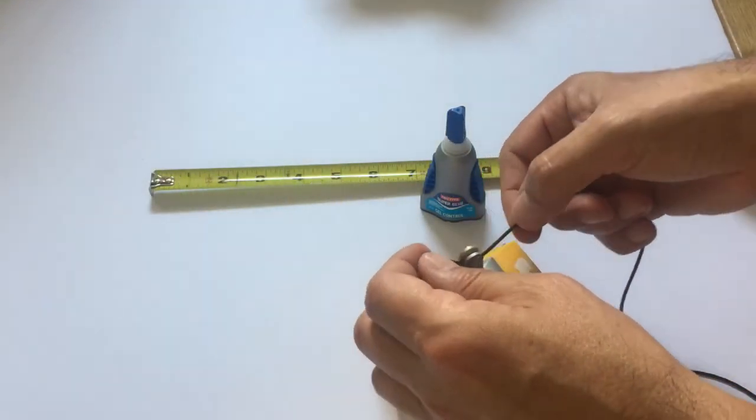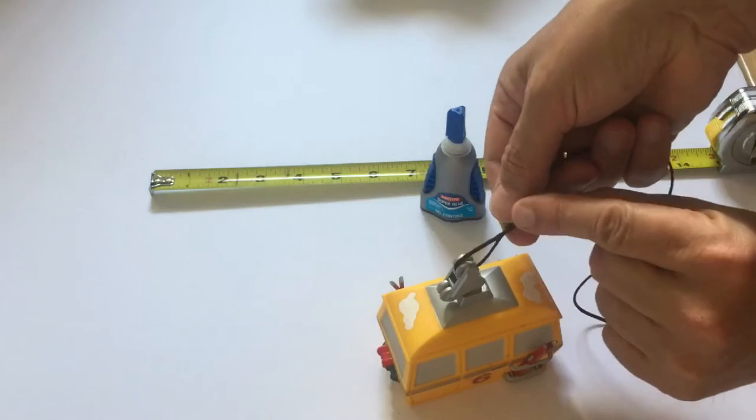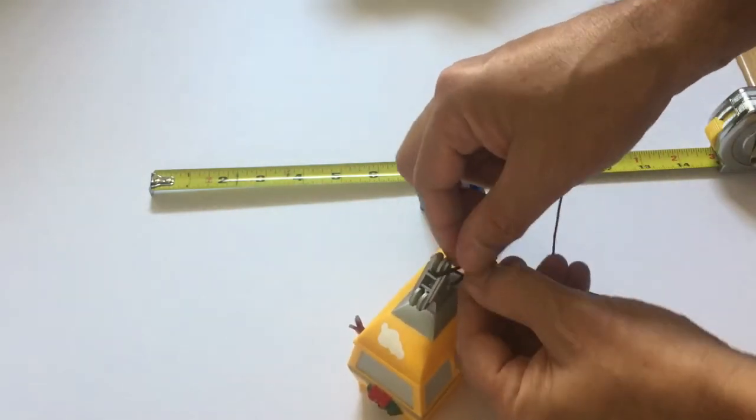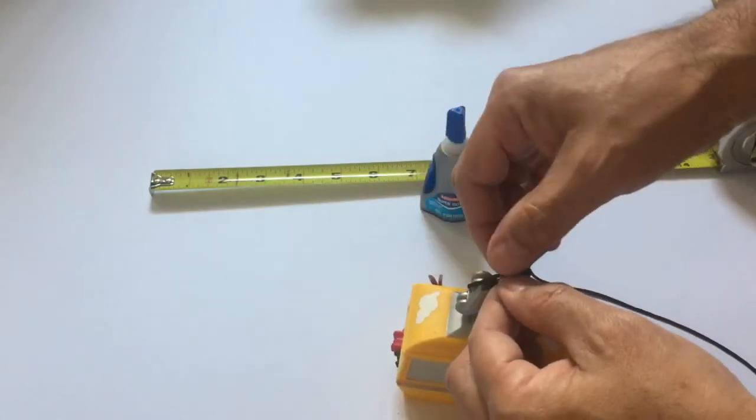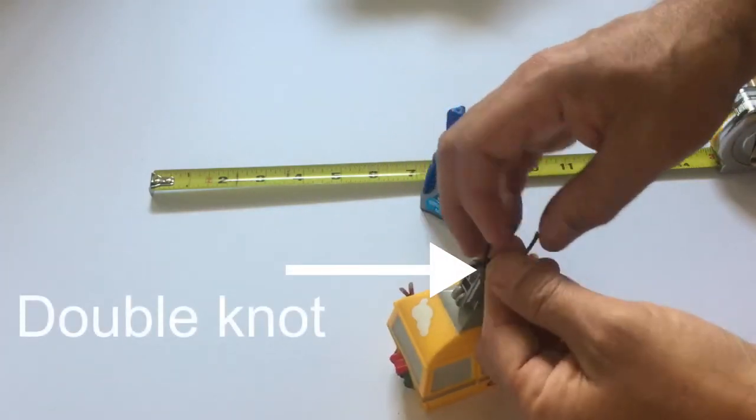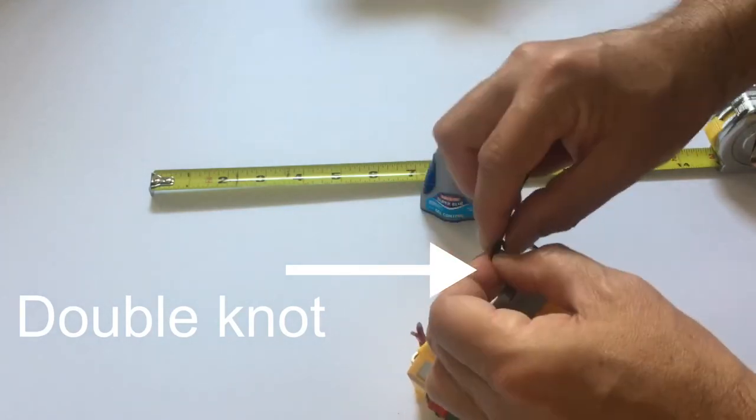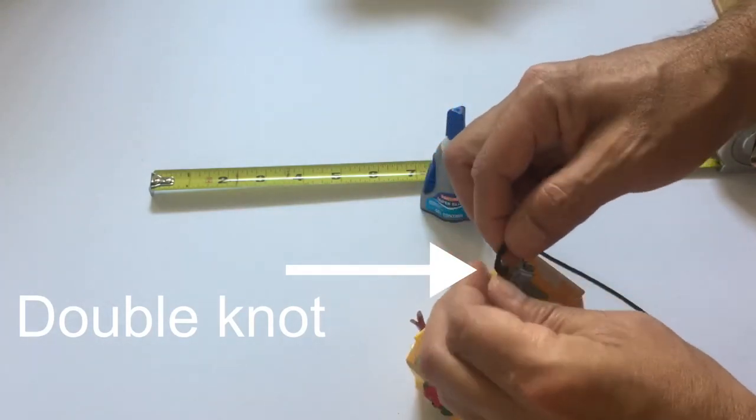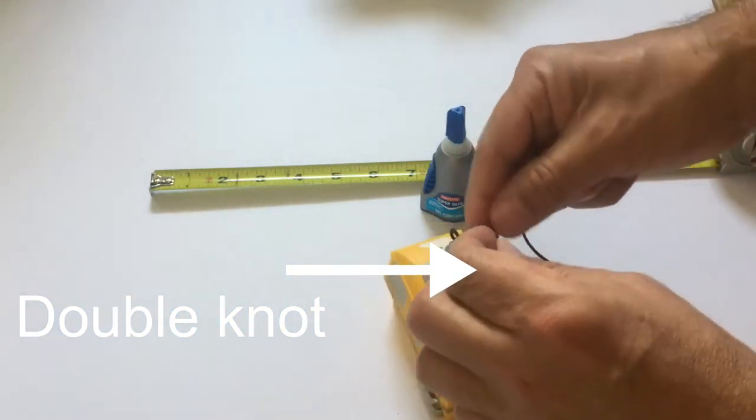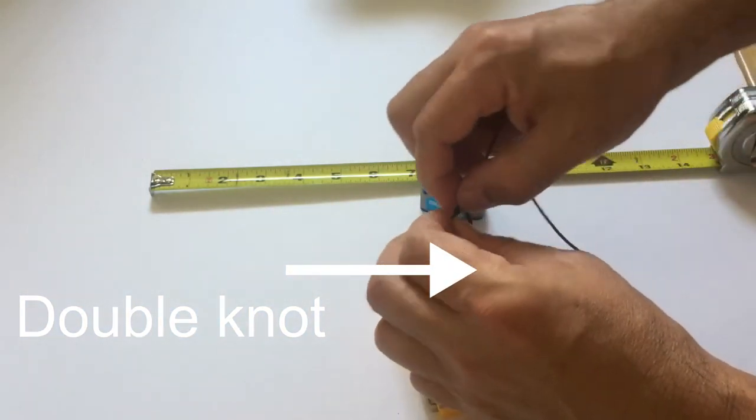Now, a tip here. Once you have measured everything, you'll tie a knot around the gondola car pulley. Double knot it. One of the biggest tips that I can give you is, add a drop of glue. Crazy glue, gorilla glue, any glue, to the knot.